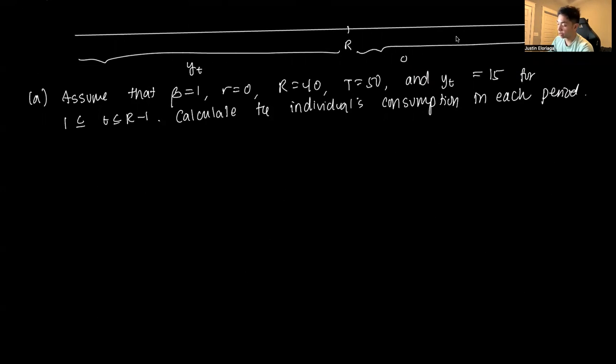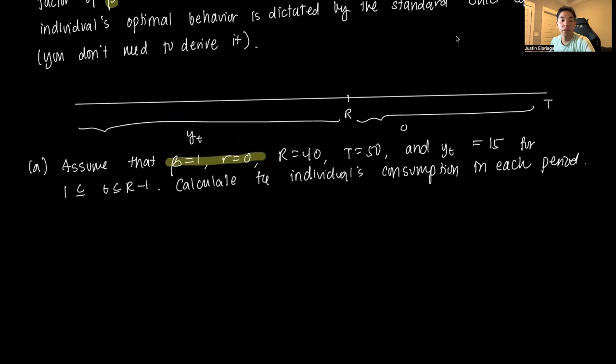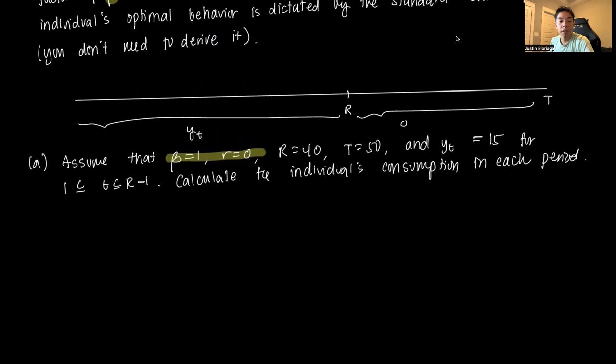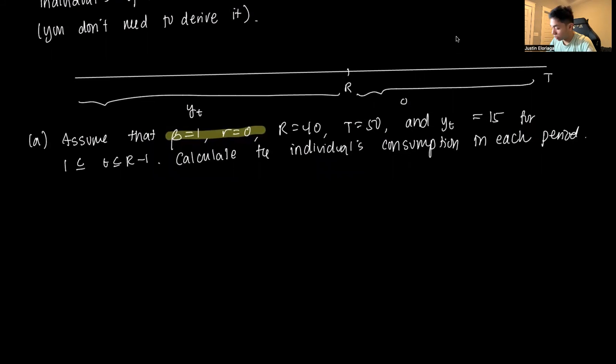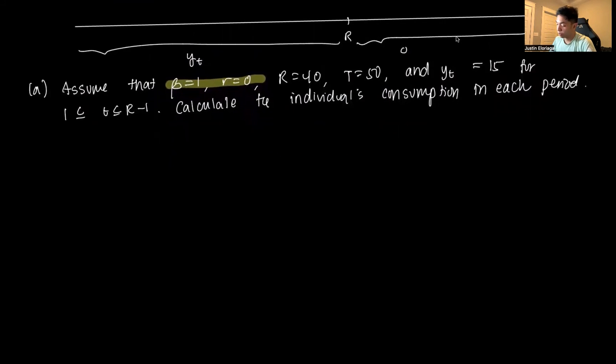Assume that beta=1 and R=0. You have R=40 as the age of retirement - those are the periods where you get to work. The time you die is the 50th period, the end of life. For periods 1 through 40 you get 15 for each period. We need to calculate the individual's consumption in each period.